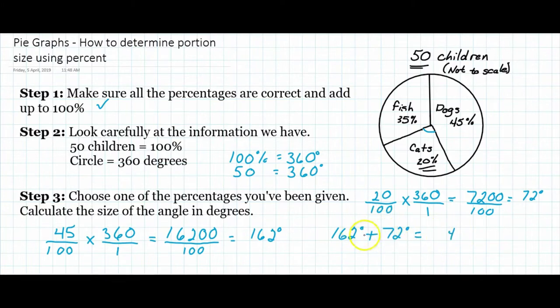So that's 234 degrees. That means cats plus dogs is 234 degrees. Hold on, I'll change the color of the pen. If we were to go all the way from here around, that's 234 degrees.